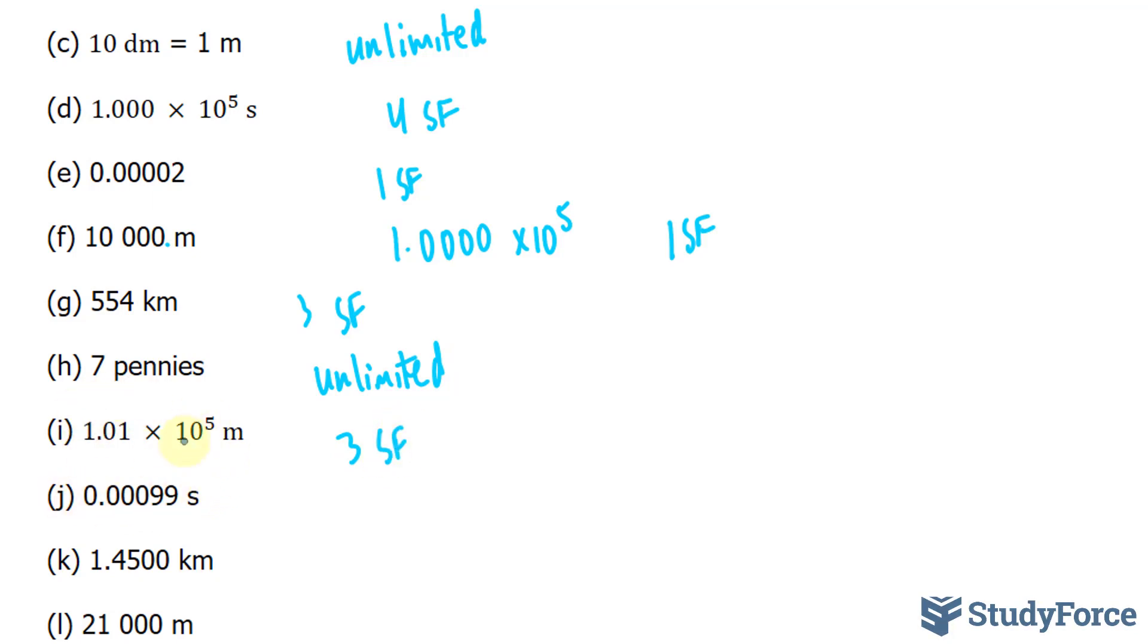In question J, we have 0.000 and then the two nines. These leading zeros are not important. These two numbers are.